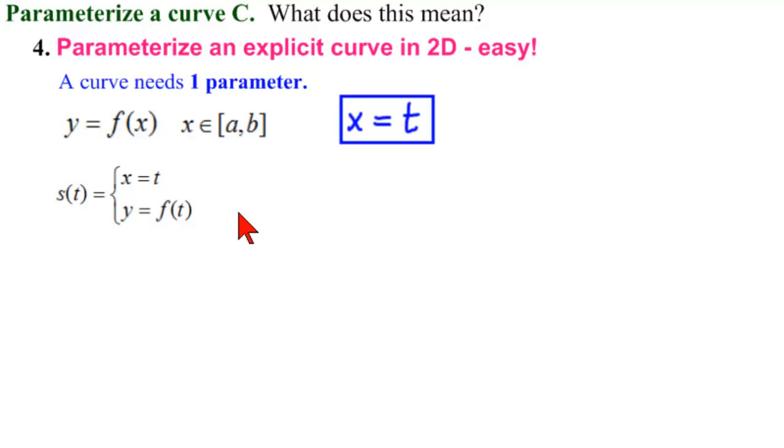So we're substituting T into F of X. And of course we need the interval, but X equals T, so our interval is just T from A to B. So parameterizing this explicit curve gives us this.